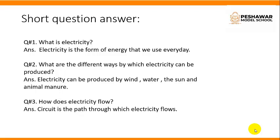Question number 2: What are the different ways by which electricity can be produced? Answer: Electricity can be produced by wind, water, the sun and animal manure.